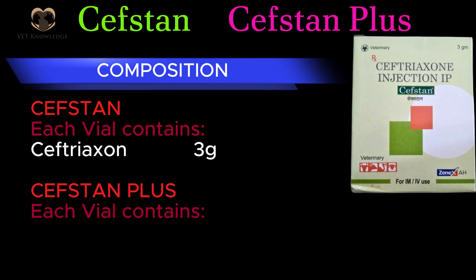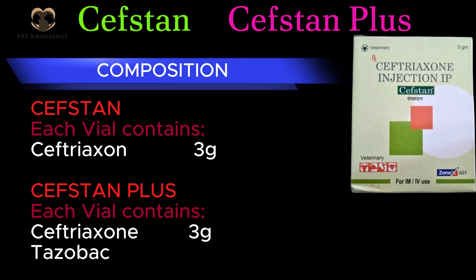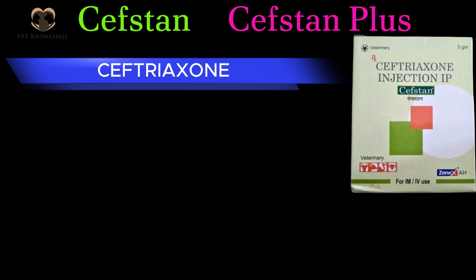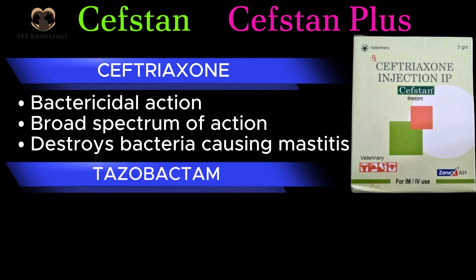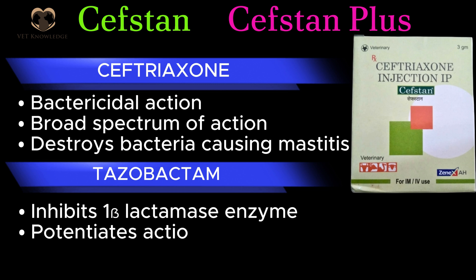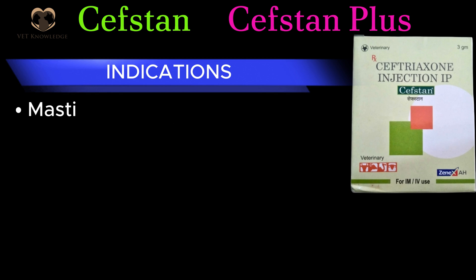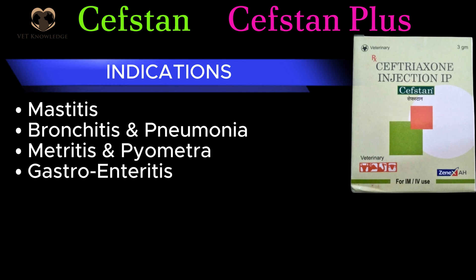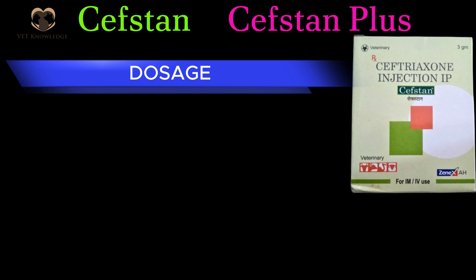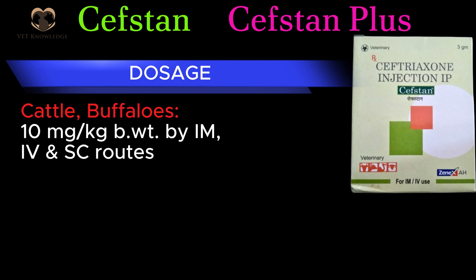Cefstan — composition: Cefstan each vial contains ceftriaxone 3 g. Cefstan Plus each vial contains ceftriaxone 3 g and tazobactam 0.375 g. Ceftriaxone: bactericidal action, broad spectrum, destroys bacteria causing mastitis. Tazobactam: inhibits beta-lactamase enzyme and potentiates the action of ceftriaxone. Indications: mastitis, bronchitis and pneumonia, metritis and pyometra, gastroenteritis. Dosage in cattle and buffaloes: 10 mg per kg body weight by IM and SC routes.